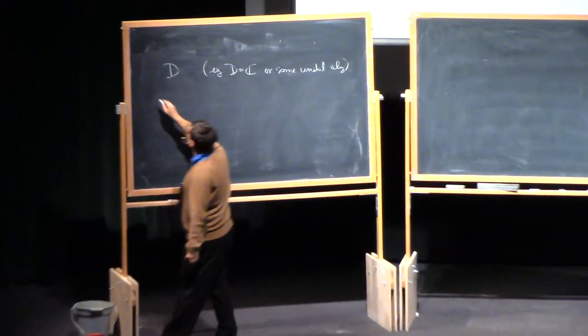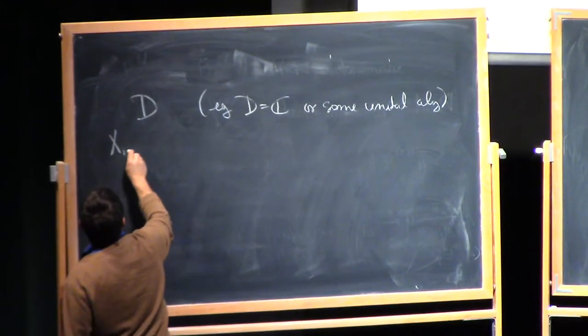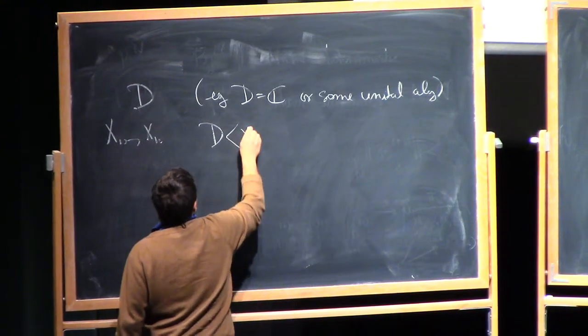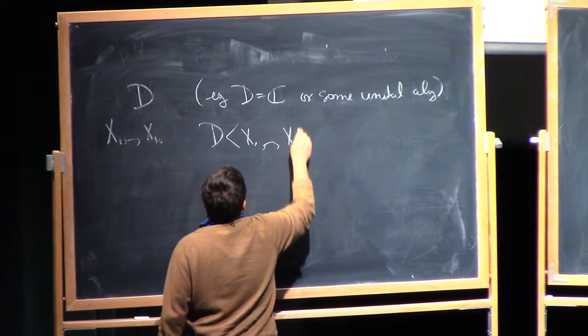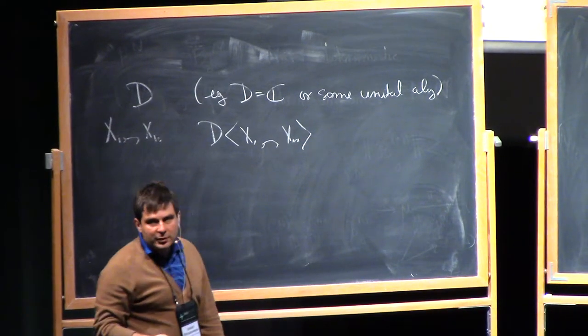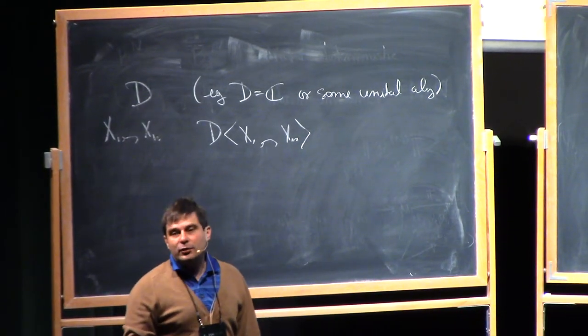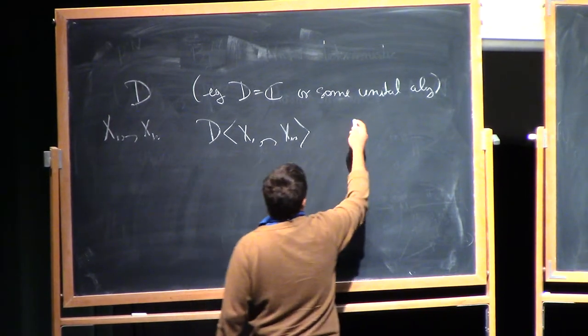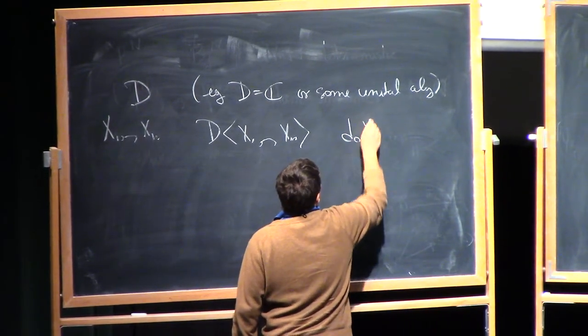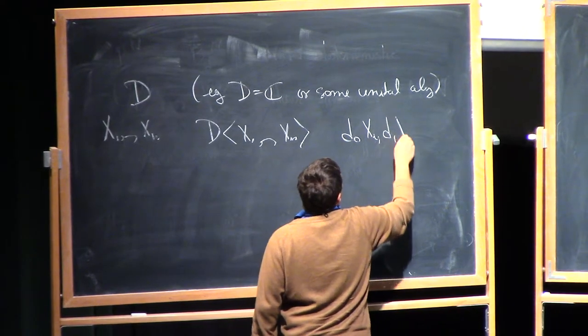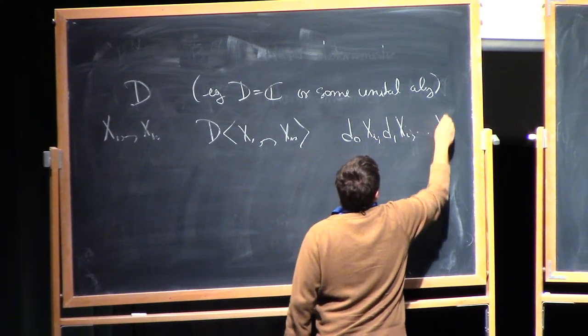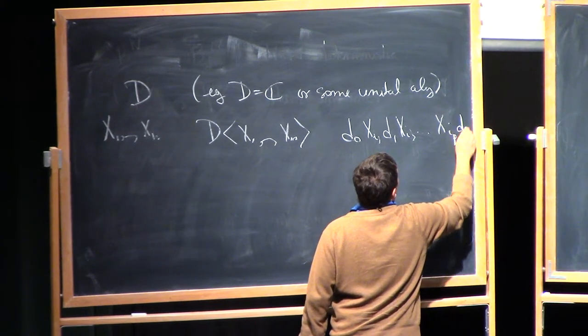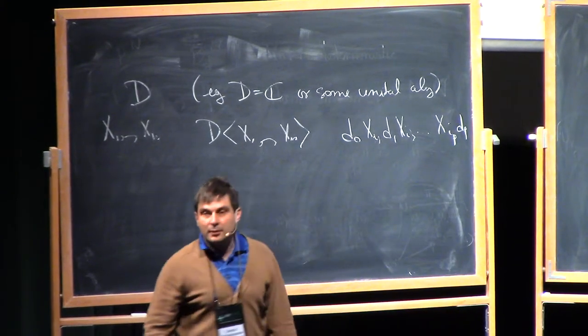So the setup here is that you have some kind of an algebra D, so this is like the algebra of coefficients. They don't play a role. So D, e.g. D is C, or some unital algebra. And then you have also some variables, x_1 to x_n. And I write D angle bracket x_1, x_n for the algebra of non-commutative polynomials in x_1 to x_n whose coefficients are from D. So this is a typical such thing as some monomial like d_0, x_i1, d_1, x_i2, x_iP, d_P. That's a typical such thing.